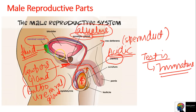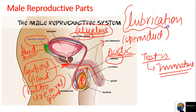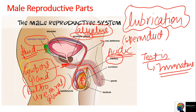Cowper's gland does roughly the same as the prostate gland and also provides lubrication to the sperm. Lubrication reduces friction - just like you put mobile oil in your vehicle, that's also a lubricant. So here the same thing happens: we want the sperm to easily pass through, so lubrication is provided by the Cowper's gland through its fluid.